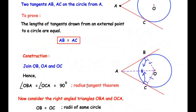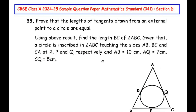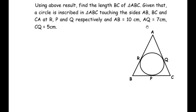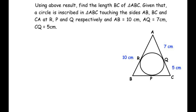Now let us focus on part 2 of this question. Using the above result, find the length BC of triangle ABC, given that a circle is inscribed in triangle ABC touching the sides AB, BC and CA at points R, P and Q respectively. AB is given as 10 cm, AQ as 7 cm and CQ as 5 cm. We need to find the length of BC. Let us begin by marking these sides: AB is 10 cm, AQ is 7 cm and CQ is 5 cm. We will make use of the proof from part 1.